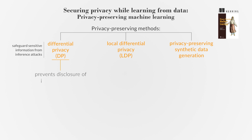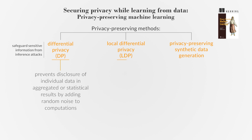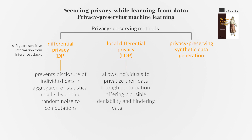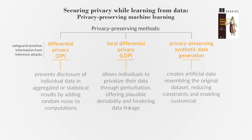LDP prevents disclosure of individual data in aggregated or statistical results by adding random noise to computations. LDP allows individuals to privatize their data through perturbation, offering plausible deniability and hindering data linkage. Privacy-preserving synthetic data generation creates artificial data resembling the original dataset, reducing constraints and enabling customization for specific needs. These techniques protect privacy by ensuring data privacy and maintaining data utility.